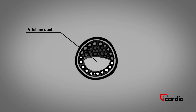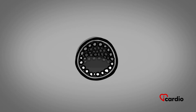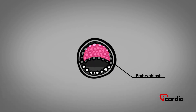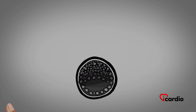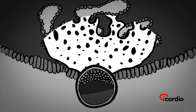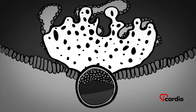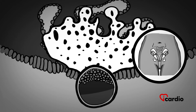The vitalin duct will eventually become the inside of the intestines, mouth, and pharynx. The upper part becomes the embryoblast. The embryo will adhere to the endometrium, the inner layer of the uterus, from this part. This adherence occurs around the 6th day after fertilization.